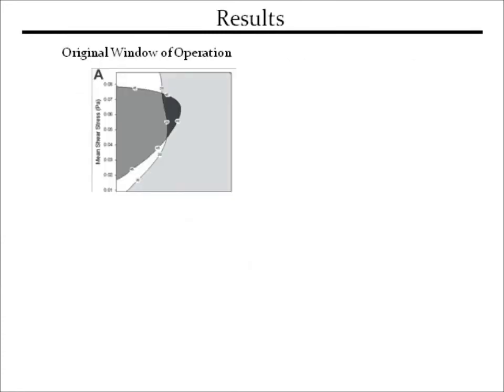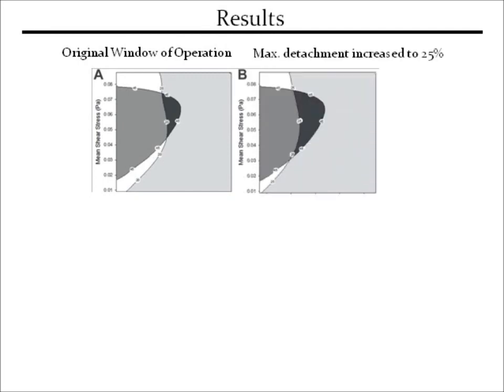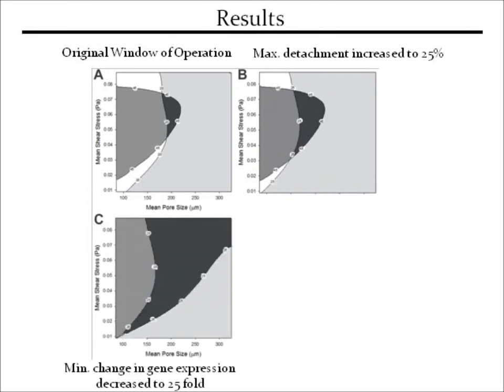Having identified an optimal operating region, we then used windows of operation to study how the size of this feasible operating region changed as the performance criteria were relaxed. Firstly, we increased the maximum cell detachment level to 25%. We then lowered the minimum change in gene expression to 25-fold.